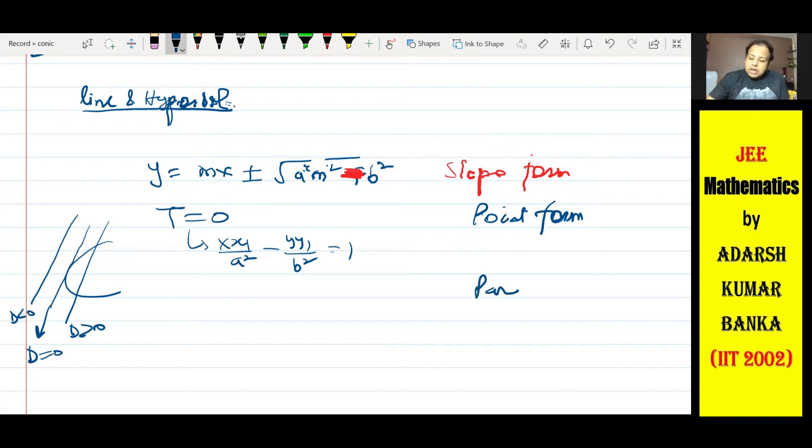Third hota tha apna parametric form. Parametric form if you remember - parametric form of tangent means tangent at parametric point. A parametric point aapko pata hai a sec theta, b tan theta hota hai. To x into a sec theta minus y into b tan theta by a square and b square. See, a and a cancel, b and b cancel. What we get is x by a sec theta minus y by b tan theta equals one. That is equation of tangent to the hyperbola.